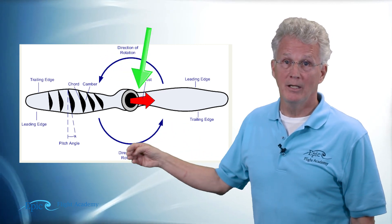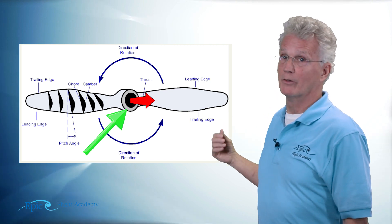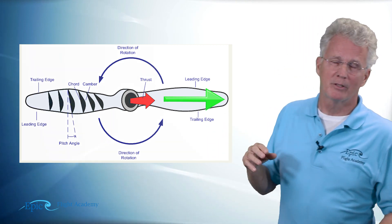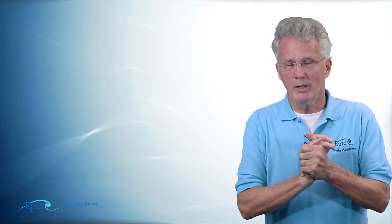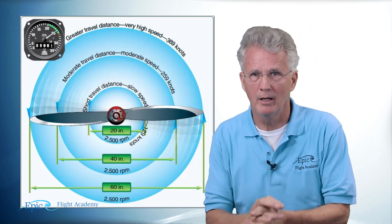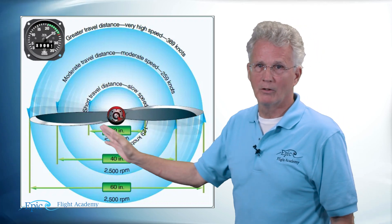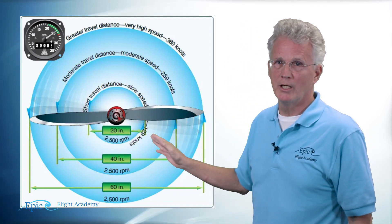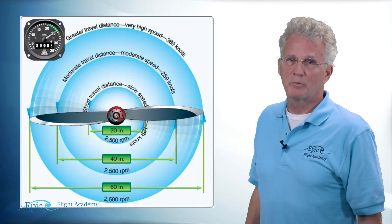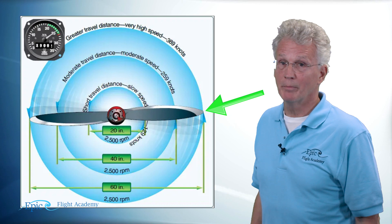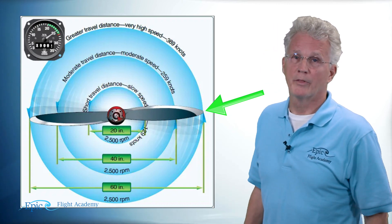Looking at our diagram, when this airfoil rotates, it makes sense that it's going to rotate slower near the hub and faster near the tip. Because it rotates slower near the hub and faster near the tip, the pitch angle on this blade changes from hub to tip. Where the speeds are faster near the tip, that pitch angle is lower.